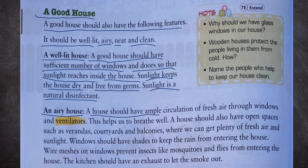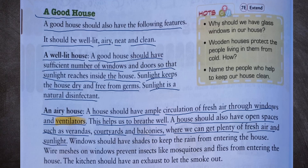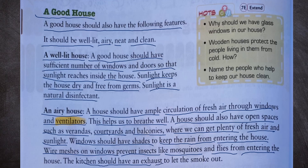An airy house should have ample circulation of fresh air through windows and ventilators; this helps us to breathe well. A house should also have open spaces such as verandas, courtyards, and balconies. Windows should have sheets to keep rain from entering. Wire meshes on windows prevent insects like mosquitoes and flies from entering. The kitchen should have an exhaust to let smoke out.